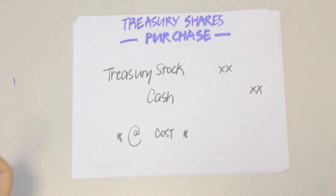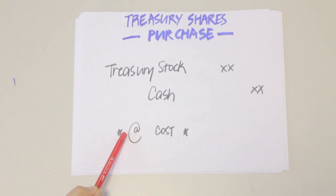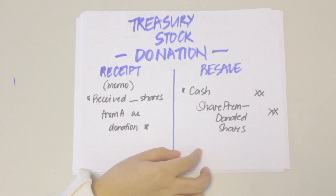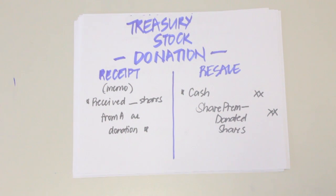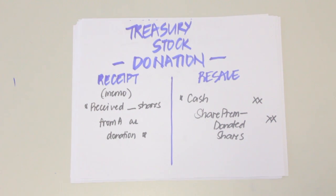Treasury shares can be acquired through purchase or donation. When acquired through purchase, we record this by debiting Treasury Stock and crediting Cash at the cost of reacquisition. Shares acquired through donation are referred to as donated stocks. These are still treasury stocks and may be reissued at any price without any discount liability. Since donated stocks are received without cost, they do not affect the entity's assets, liabilities, or stockholders' equity, although they do reduce outstanding shares. However, the reissue or resale of donated stock increases assets and additional paid-in capital, or share premium.